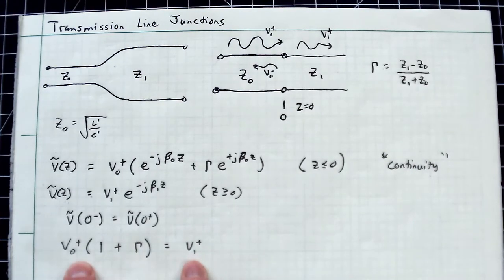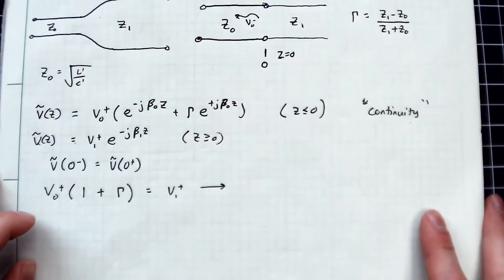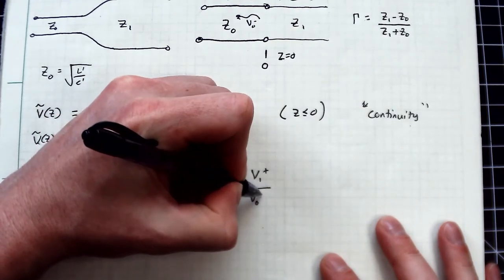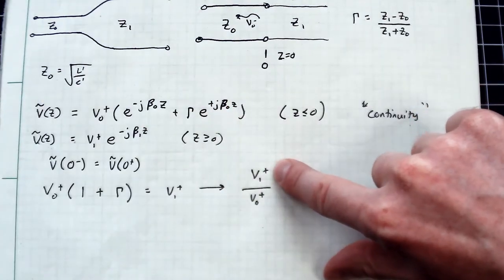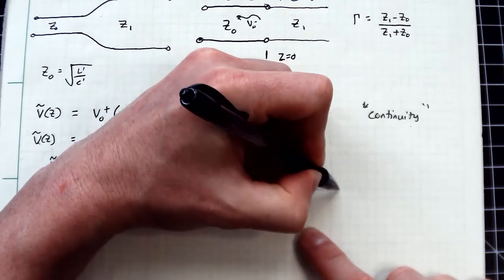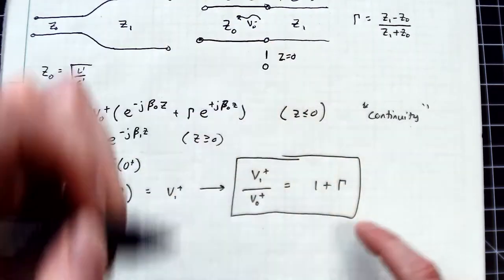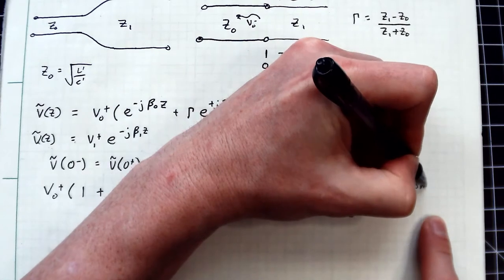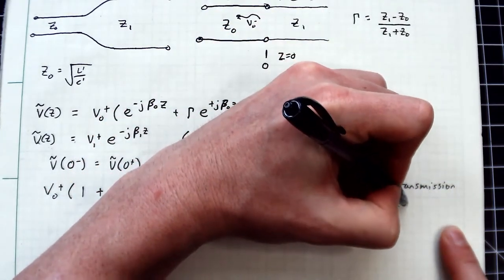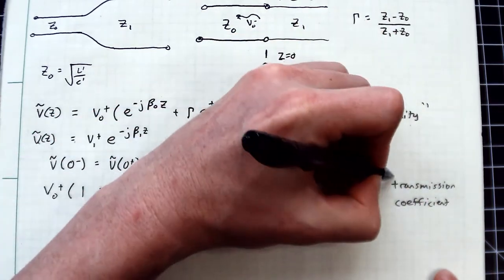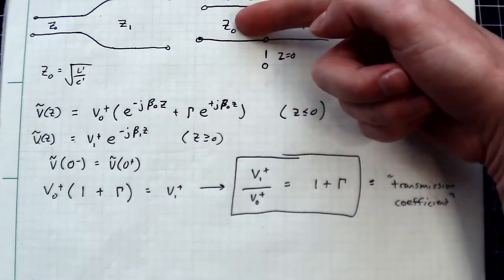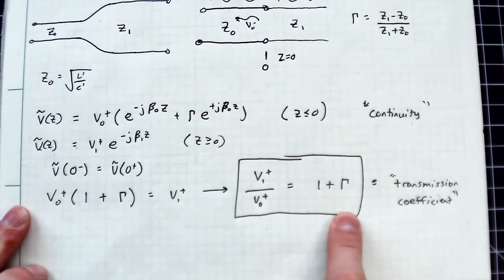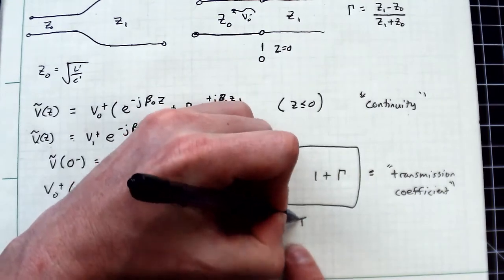Now I'm going to take the ratio of these two terms. V₁⁺ divided by V₀⁺ - the transmitted wave into the second line divided by the incident - equals 1 plus γ. This ratio has a special name: the transmission coefficient. It's perfectly analogous to the reflection coefficient, where you had the ratio of reflected wave relative to incident wave. Now I have transmitted wave relative to incident wave. Your textbook uses a capital T for that.